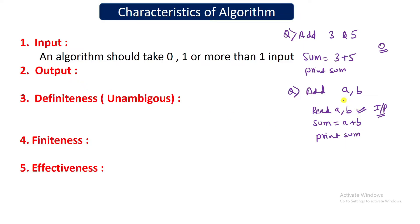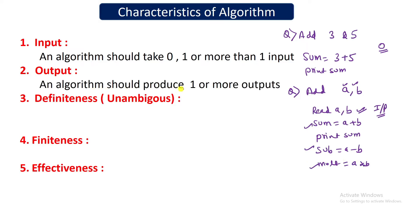For example, if you are asked to read values of a and b and then print the sum, the subtraction, and the multiplication of a and b, that gives you three outputs. So basically your algorithm should produce one or more outputs — it cannot produce zero outputs. If it produces zero output then that is not a correct algorithm.